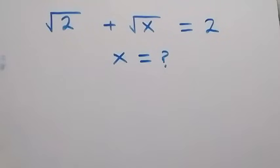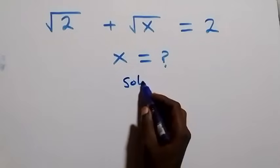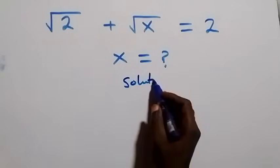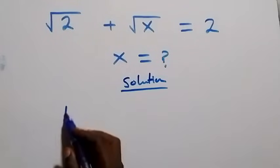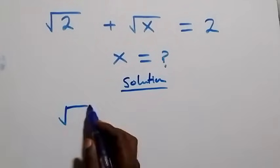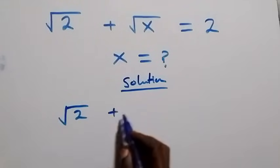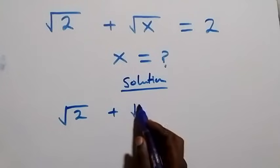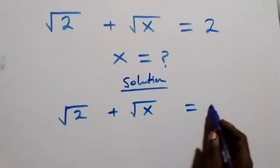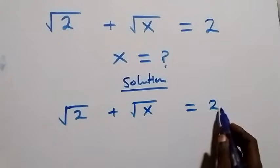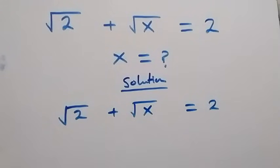Hello, you are welcome. How to solve for x in this math problem. From what is given, which is root 2 plus root x equals to 2. From what we have here, we can square both sides.